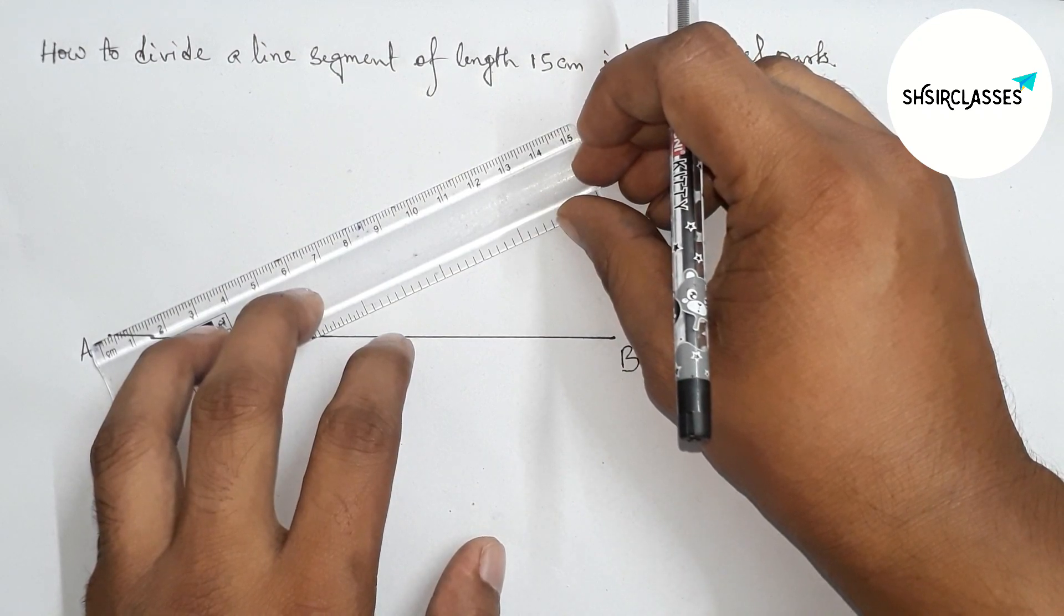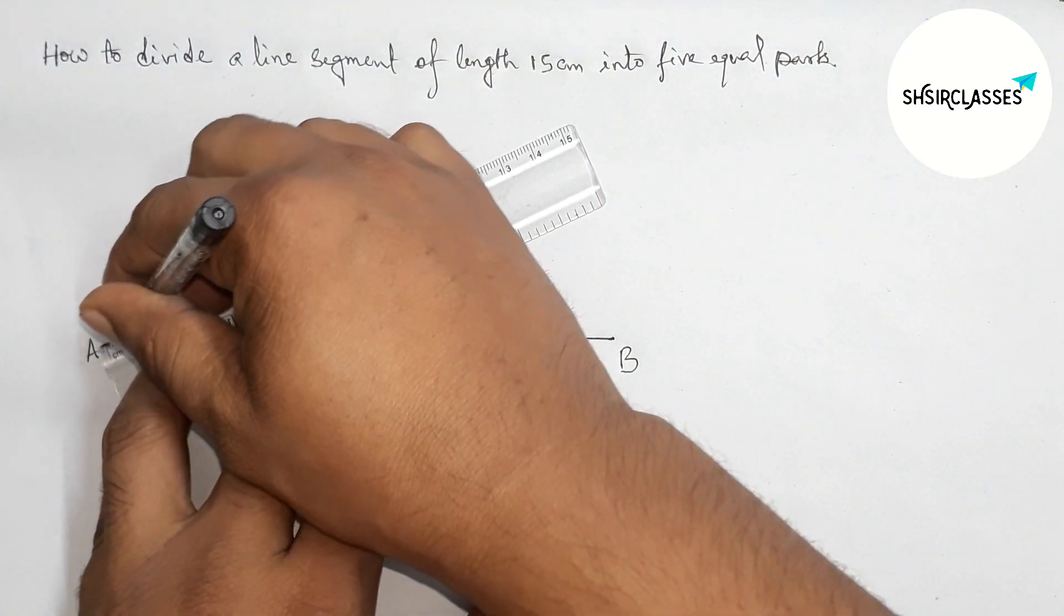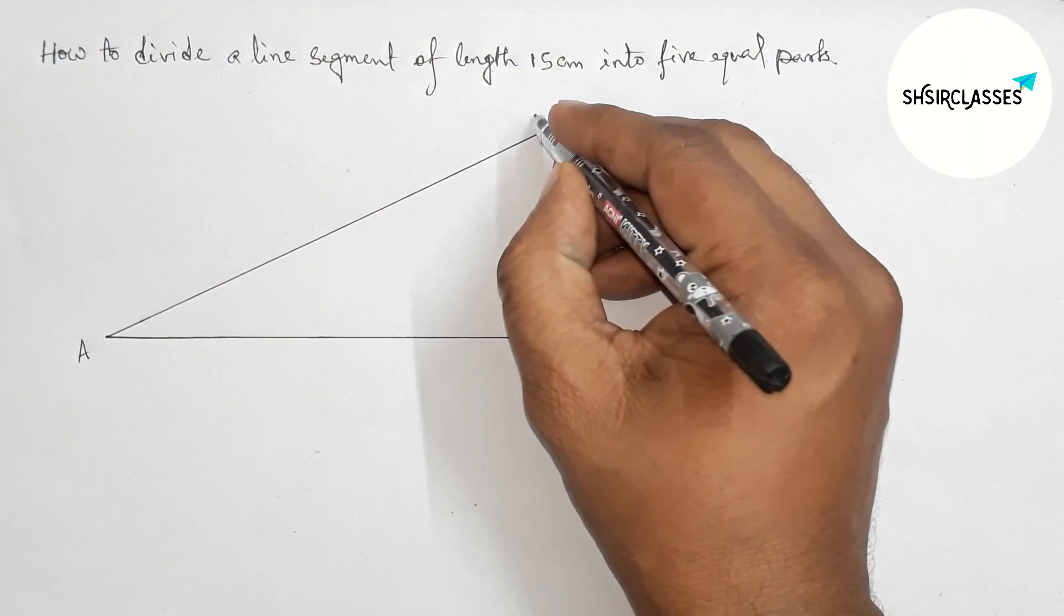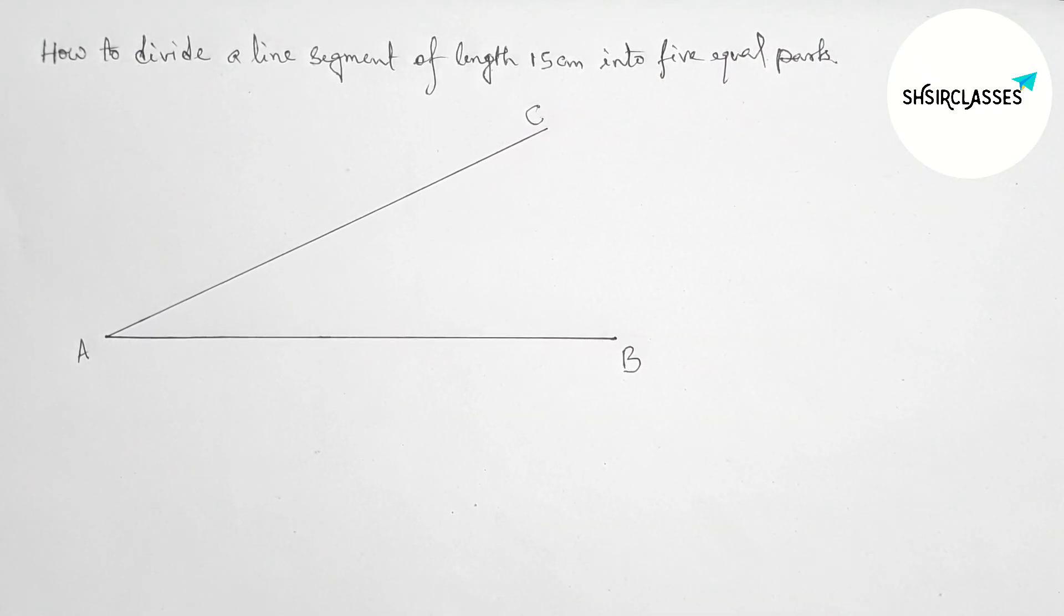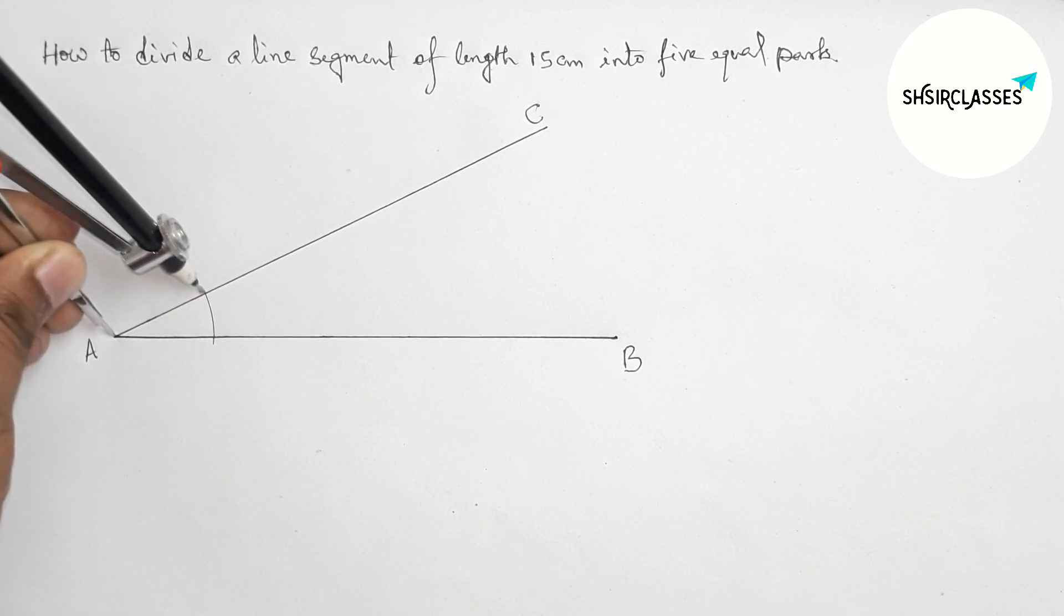With the help of a scale, take any angle and first draw a straight line this way, marking point C. This angle can be any angle. Now, take any length on the compass.